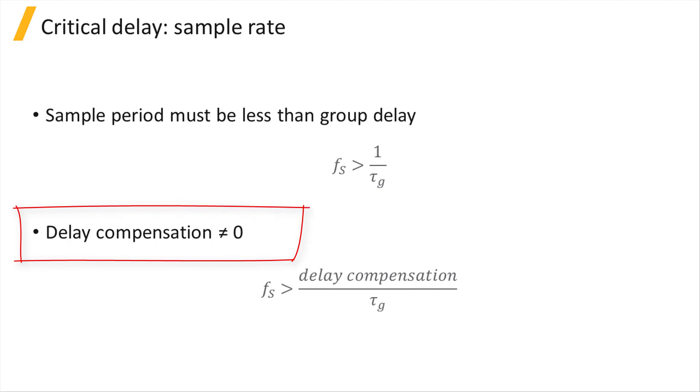When the delay compensation of an element is a non-zero value, the sample rate must be greater than the delay compensation divided by the group delay. If this condition is not met, a warning message will appear, as we'll see shortly in the demo.